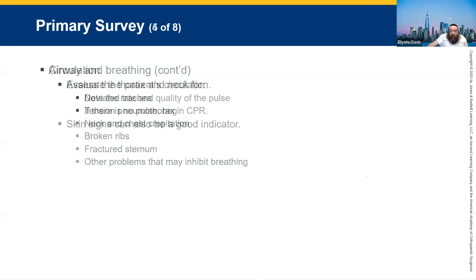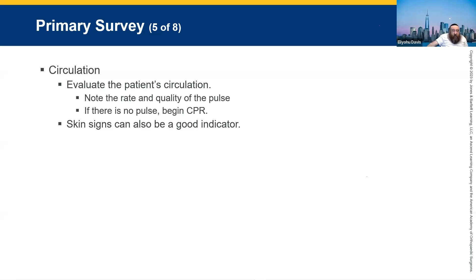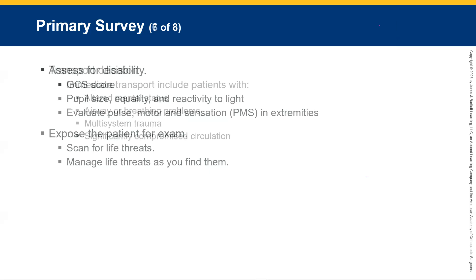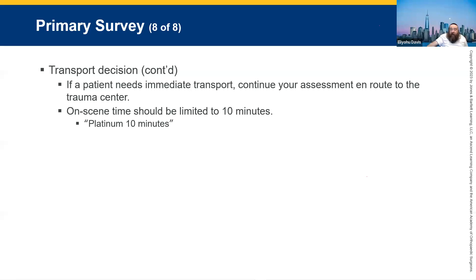In the primary survey: A is airway, B is breathing, C is circulation — obviously we do CPR if needed. D is GCS and pupils, and E is exposed — look for life threats and other injuries. Transport decision: always a trauma center. In New York we always want to go to a trauma center, and we have plenty of them.